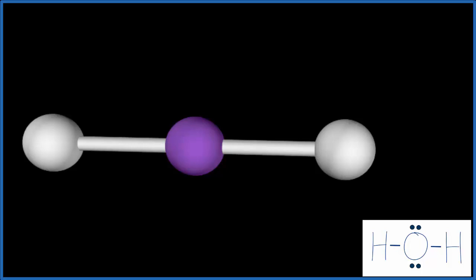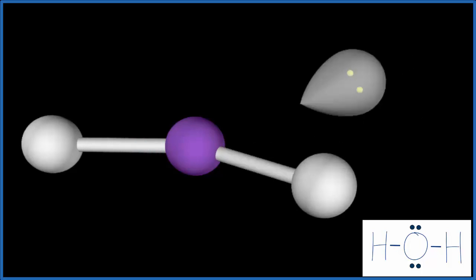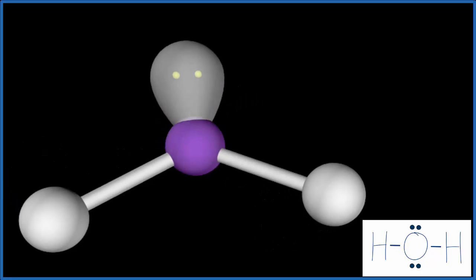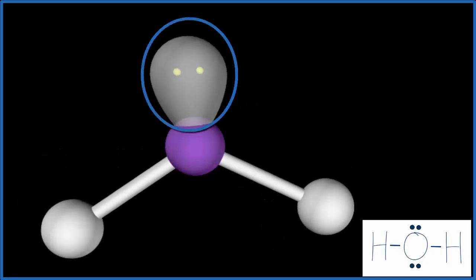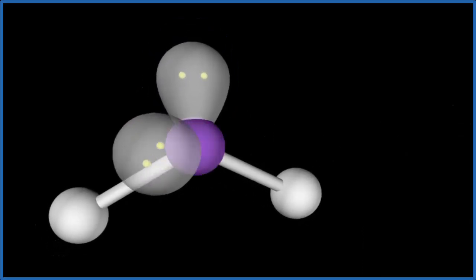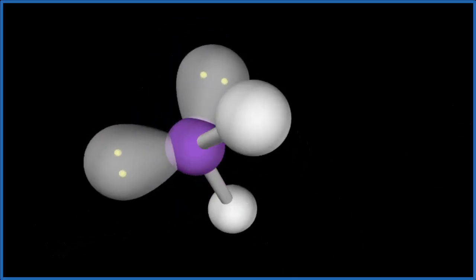but we've got to add those unbonded pairs of electrons. So we'll add one here, and you can see everything pushes away. It has its own orbital, it has its own electron cloud. We'll add the other one, and this is the structure for water.